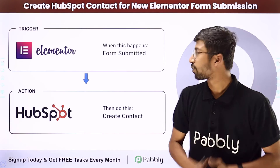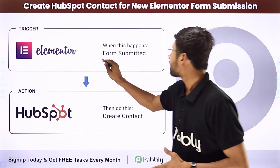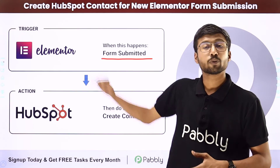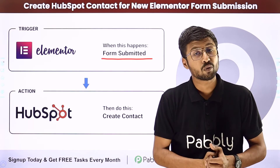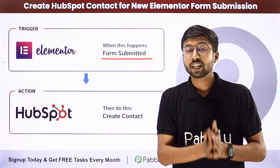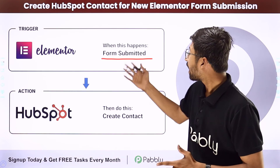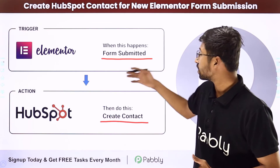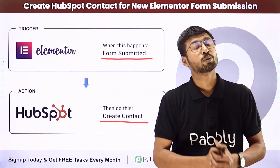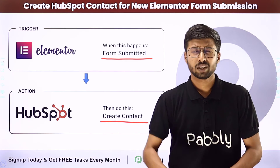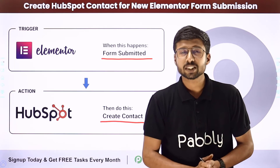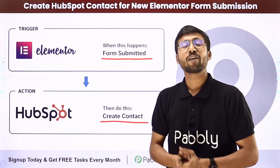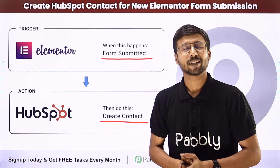In this automation, the trigger will be getting a new form submission — a new response in Elementor forms. The action will be adding the contact with the same form submission details in HubSpot CRM. To see how you can set up this automation, let's go to my screen.